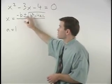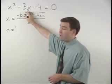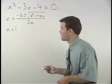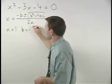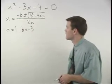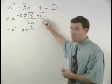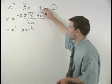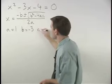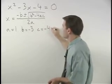The value for b comes from the coefficient on the x term, which in this case is negative 3, so we say that b equals negative 3. And the value for c comes from the constant term, which in this case is negative 4, so we say c equals negative 4.